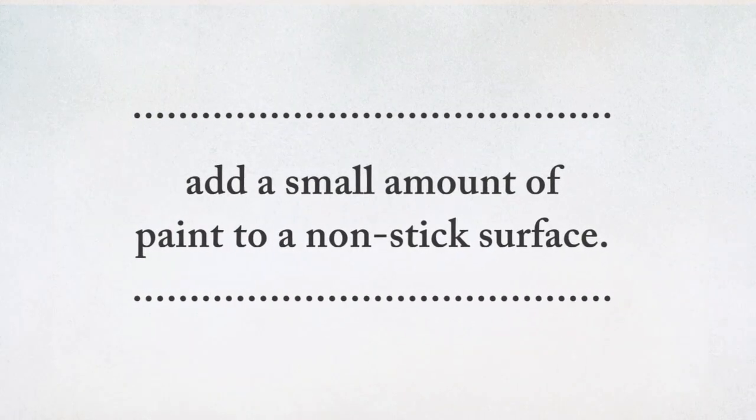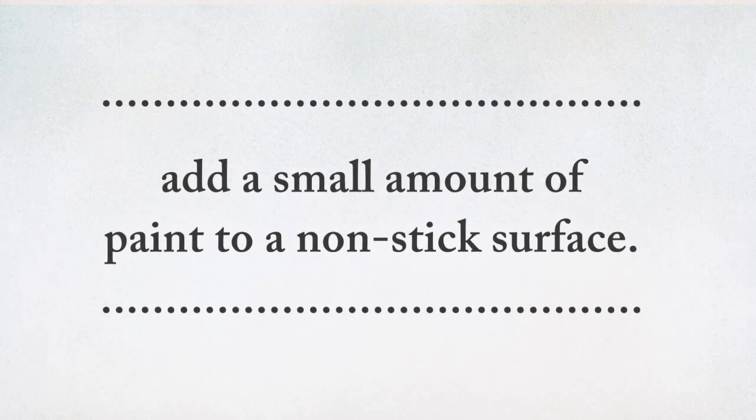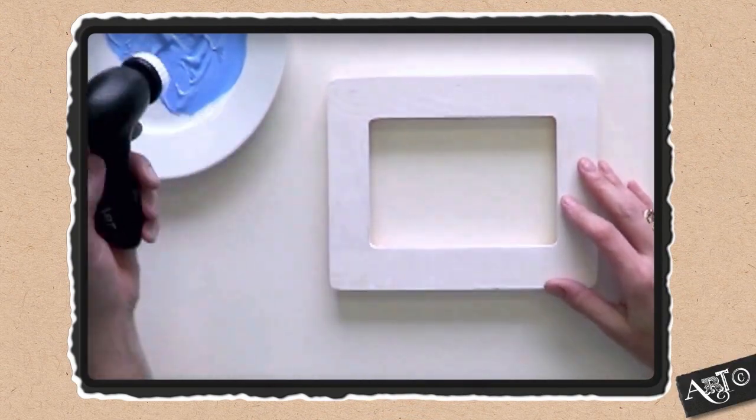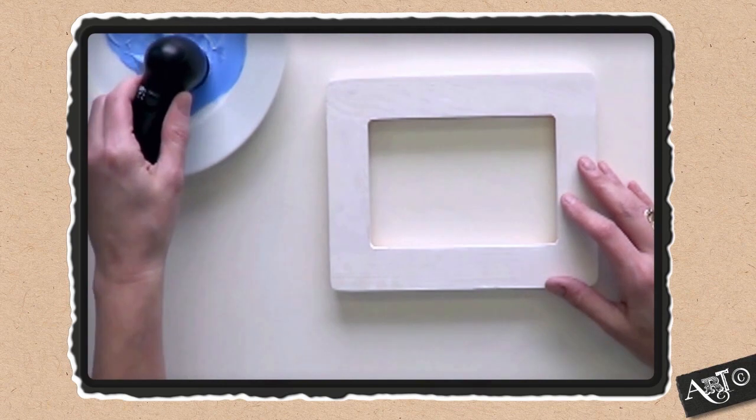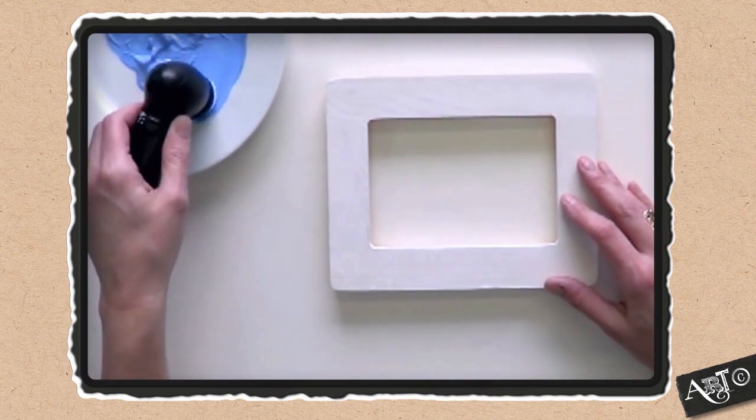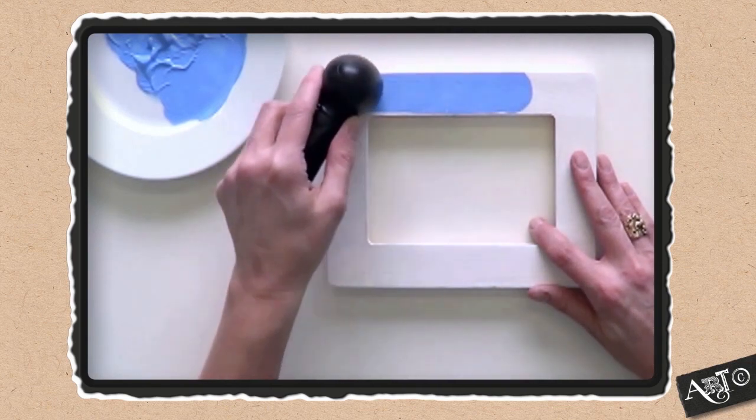Prepare your palette by adding a small amount of paint to a non-stick surface. Select the brush tip and snap it onto the tool. With the Groove tool on high, swirl the brush around with a small amount of paint and apply it to the desired surface. Repeat until your surface is covered.